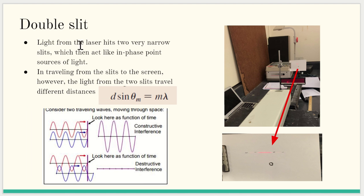Double slit. The light from the laser hits two very narrow slits, which is a double slit, which then acts like in-phase point sources of light. In traveling from the slits to the screen, however, the light from the two slits travels different distances.